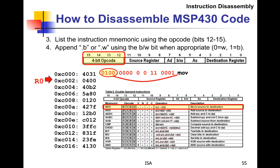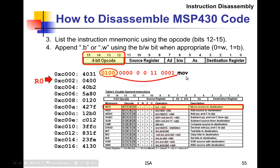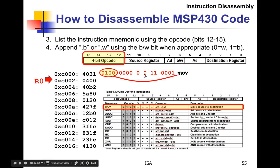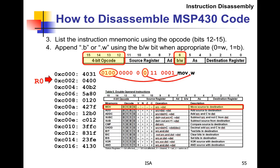We look up 0100 in the opcode table and it's a move instruction. Now we add the .W or .B suffix. Counting over six bits from the right — that bit is a 0 — so it's going to be a .W. So we add .W to the mnemonic. That's the next step, and then we look at the addressing mode.